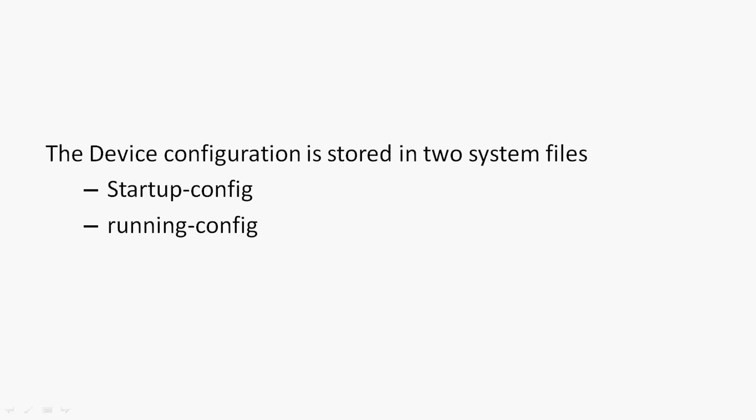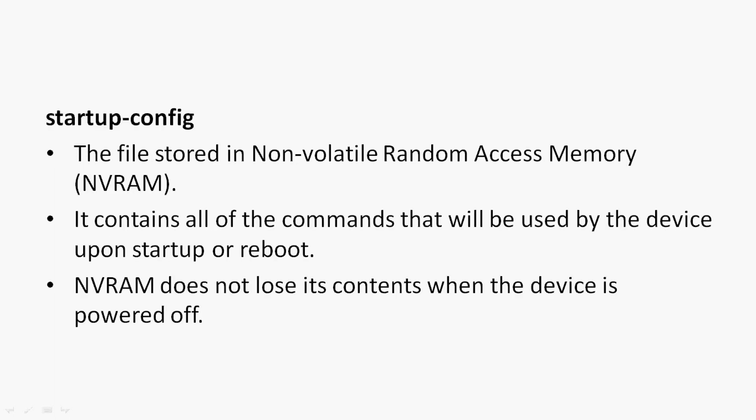The device configuration is stored in two system files: startup config and running config. The file stored in non-volatile random access memory, i.e. NVRAM, is the startup config, and it contains all of the commands that will be used by the device upon startup or reboot. NVRAM does not lose its contents when the device is powered off.